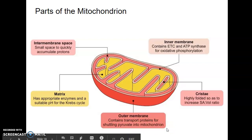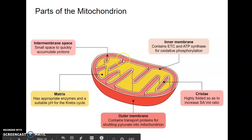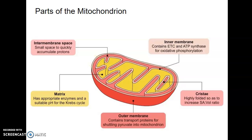The outer membrane also transports NAD, FAD, water molecules, and other molecules involved in respiration. The inner membrane space is a lot like the cytosol characteristically. It's really just an area for molecules being transported back and forth to accumulate — a small space to quickly accumulate protons. It is selectively permeable in its contents, but not as selective as the matrix. The outer membrane is selectively permeable, but the inner membrane is a lot more selectively permeable.